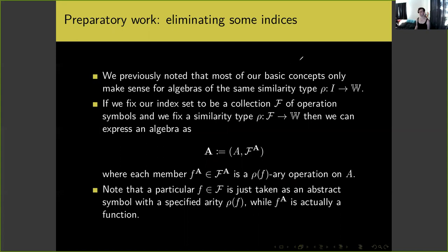We previously noted that most of our basic concepts only make sense for algebras of the same similarity type rho, taking our index set i to the whole numbers 0, 1, 2, 3, and so forth. Since we really are only going to be talking about homomorphisms from an algebra to a similar algebra, or products of similar algebras, we're going to fix our index set to actually be a collection — calligraphic F — of operation symbols. For each operation symbol we give that symbol a similarity type given by a function rho from F to ω.